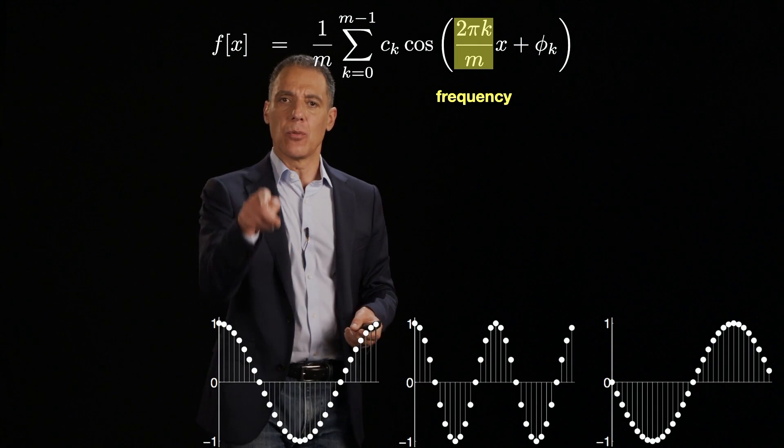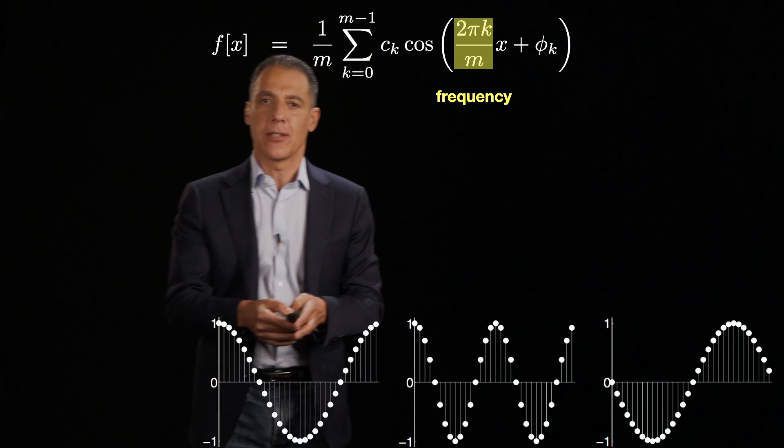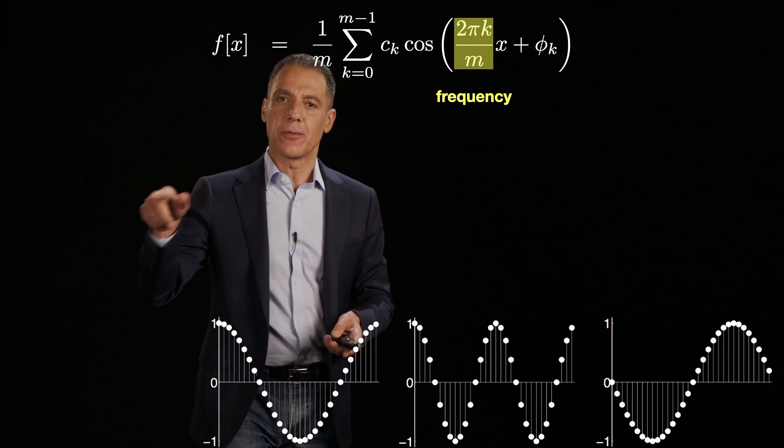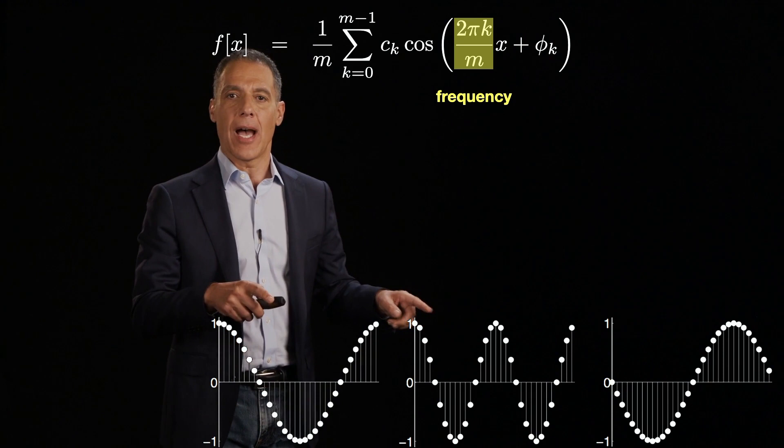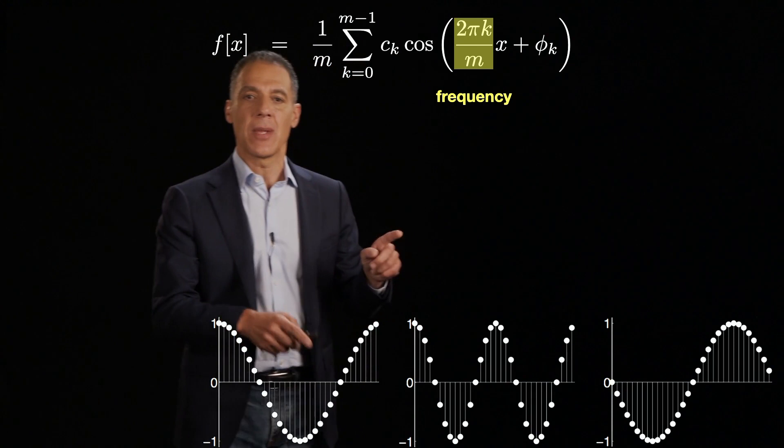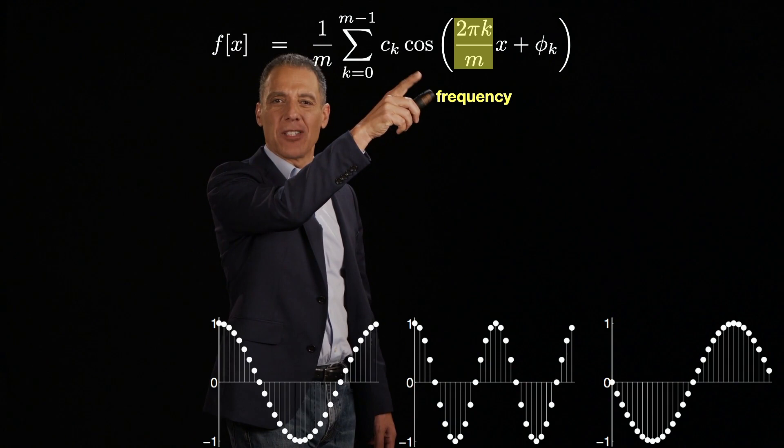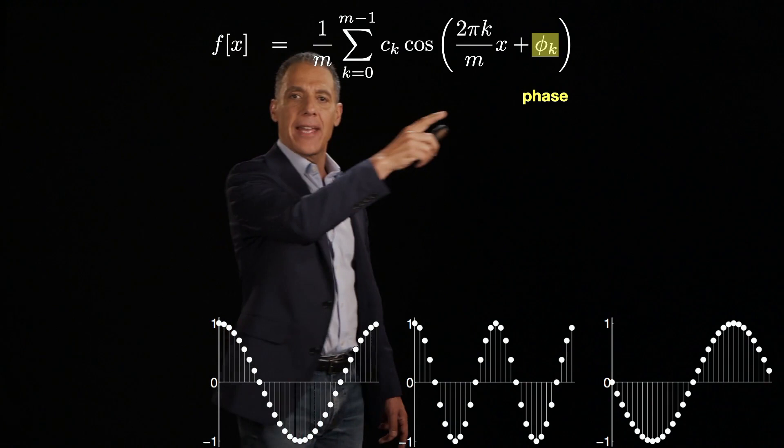I think everybody knows what the cosine is. If you walk around a circle, the x component gives you the cosine, the y component gives you the sine function, and the speed at which, the number of rotations you do gives you different frequencies. And where you start on the circle gives you different phases. Lots of fussiness there which just has to do with getting the units right.